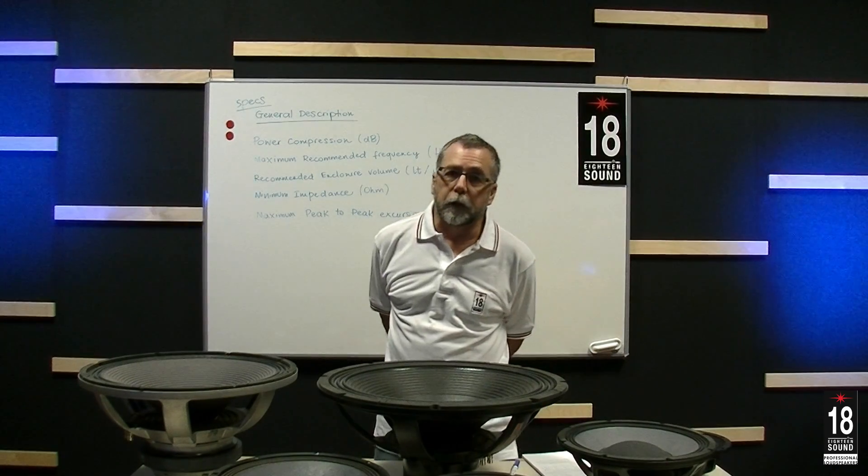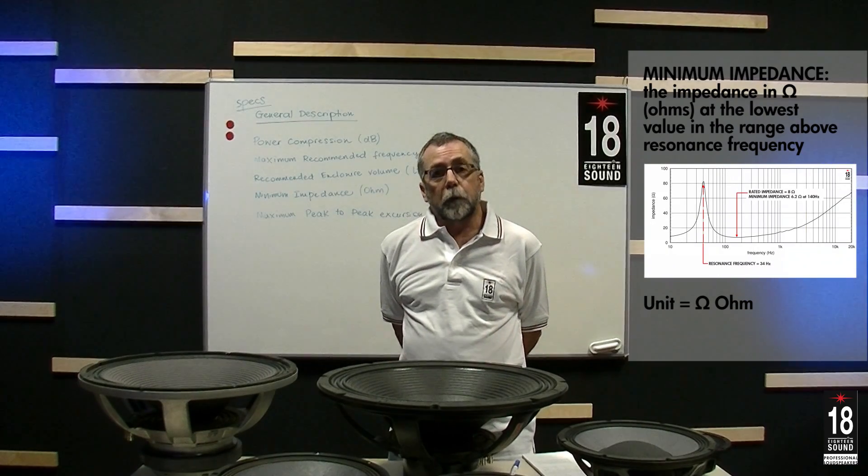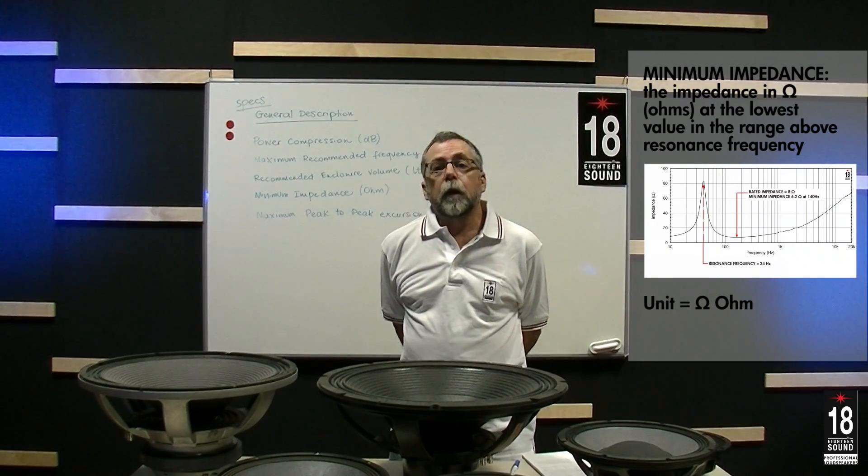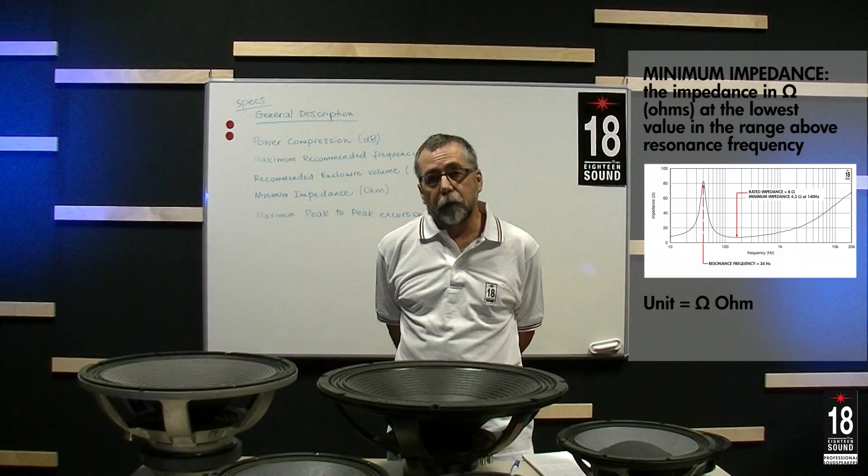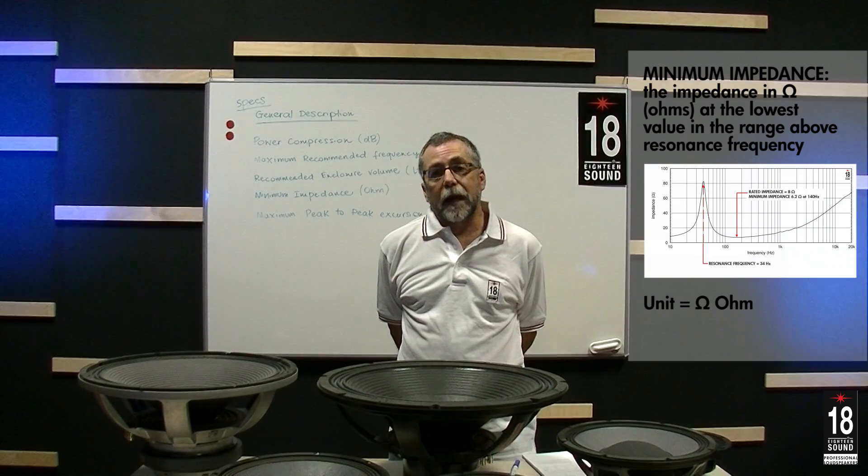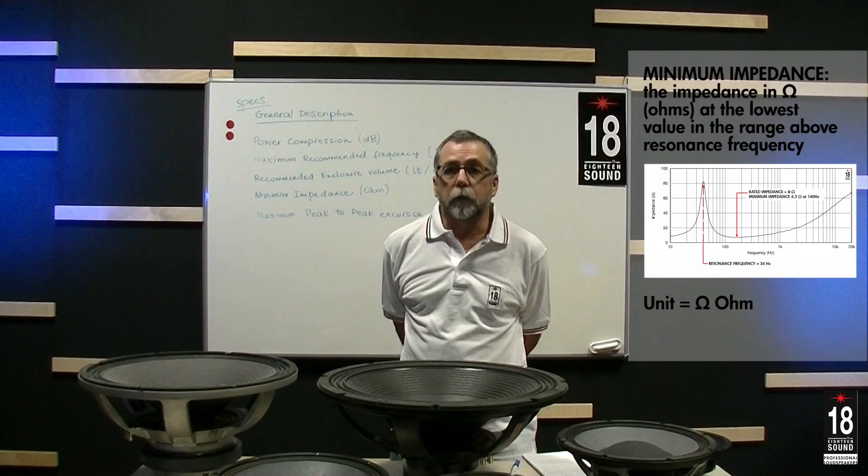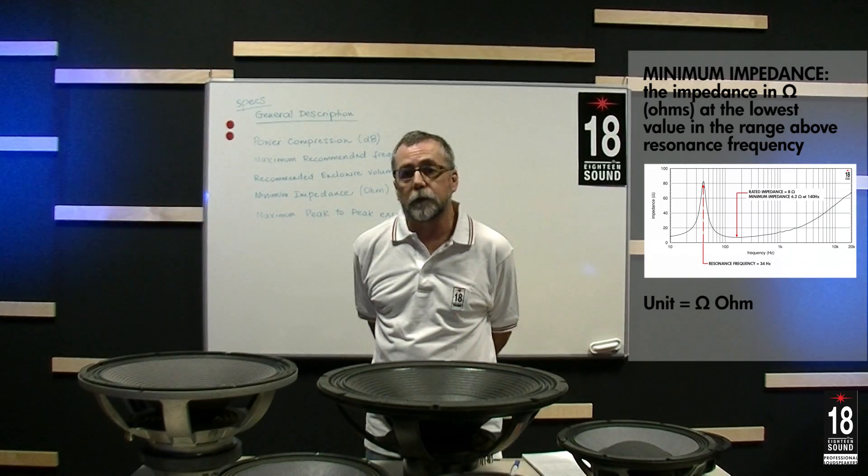Next is the minimum impedance. If you recall, on the impedance curve, there's a peak at the resonance frequency, and then as the frequency rises, the impedance diminishes. The minimum impedance is the point on the curve where the impedance is at its minimum. Very important when you're coupling with amplifiers to understand what this minimum impedance is.